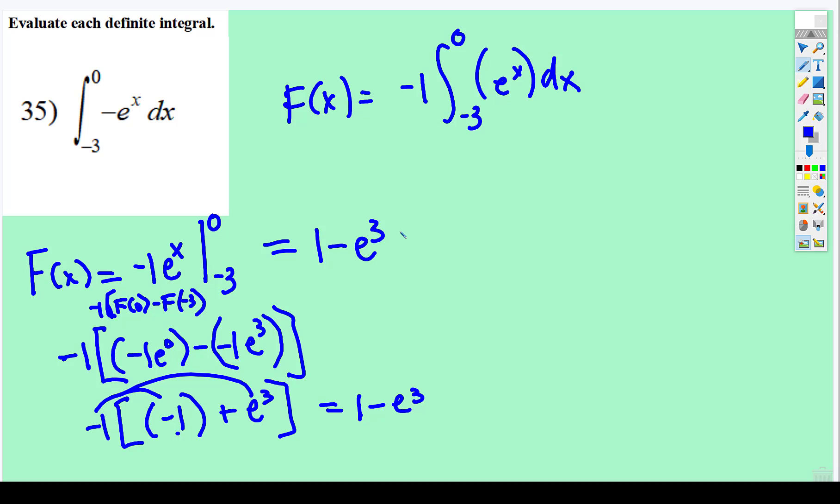When you type that in your calculator, you get a numerical value. So you type in 1 subtract, hit 2nd, ln, and that gives you the caret and parentheses, so type 3, close parentheses, enter.